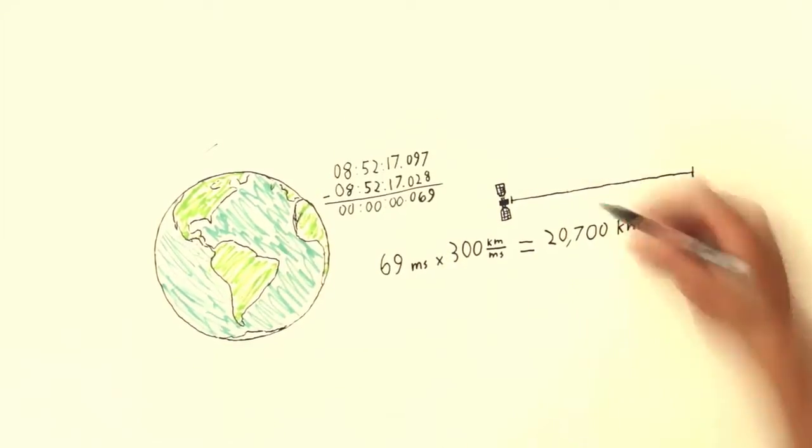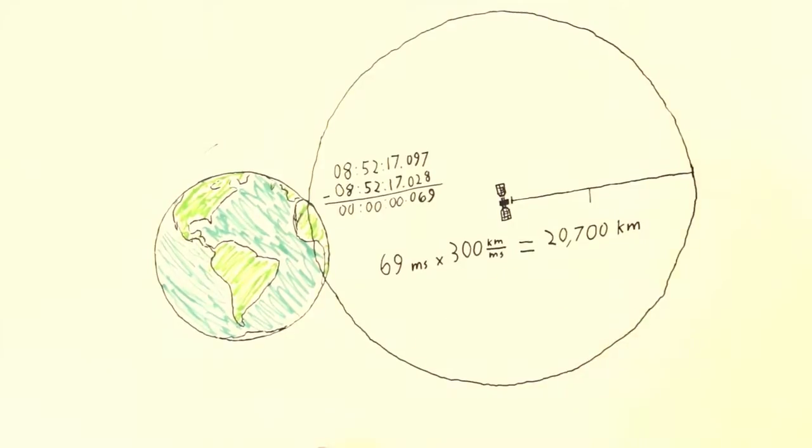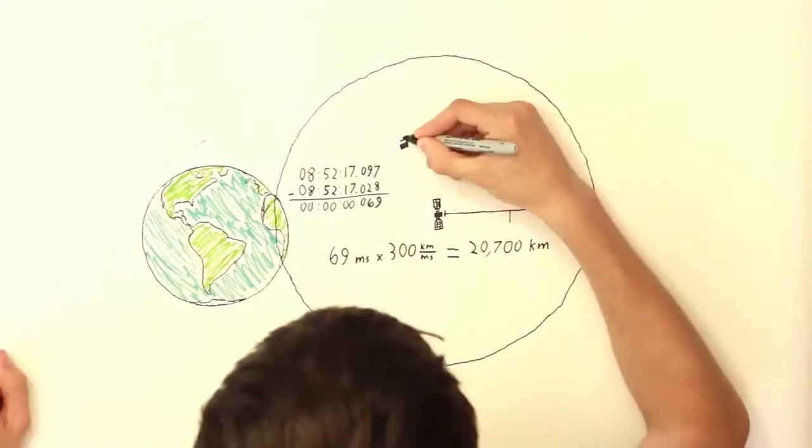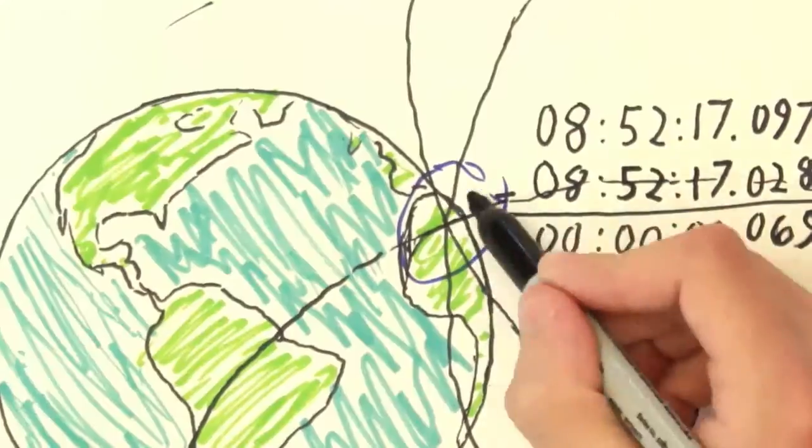You can then draw an imaginary circle around that satellite. You are somewhere on the circumference of that circle, but you don't know where. Not super helpful. But with a signal from another satellite, you can narrow it down to two points. And with a third, you can be sure of your exact position. This is called trilateration.